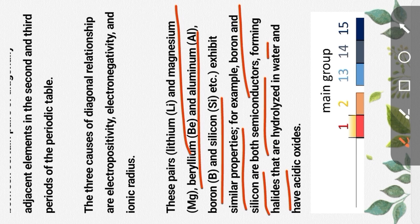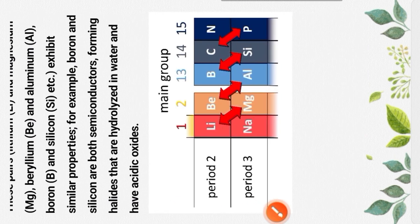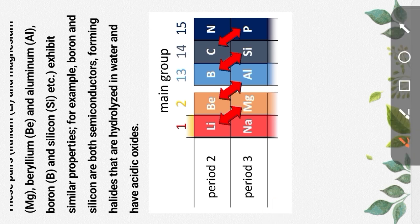The diagonal relationship can be visualized in the periodic table across groups 1, 2, 13, 14, and 15 for periods 2 and 3. The relationships include lithium to magnesium, beryllium to aluminum, boron to silicon, and carbon to phosphorus. Please refer to the PDF form of the study material and the decision box. Thank you.